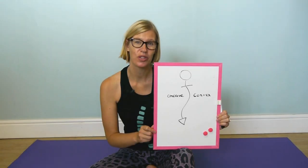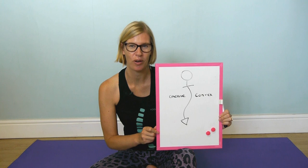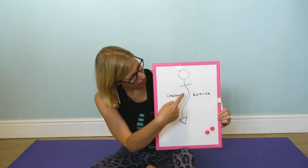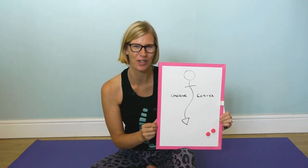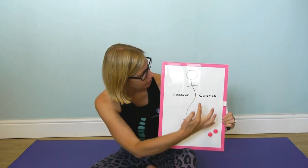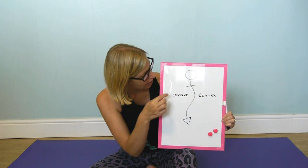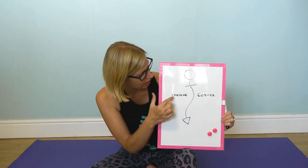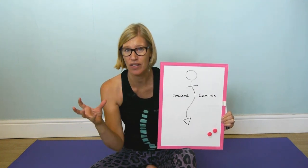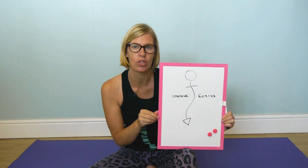Scoliosis is a sideward curvature of the spine which also comes with a rotation, which we'll discuss in another video. Today we're going to talk about the convex side versus the concave side of the curve. I've made a little drawing here to demonstrate — we're looking at this from the back. The area where the curve is going towards is called the convex side; the area on the other side is called the concave side. Think of concave like a cave — the sunken-in area.